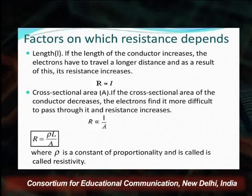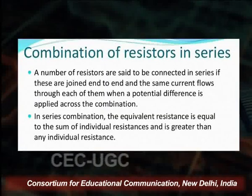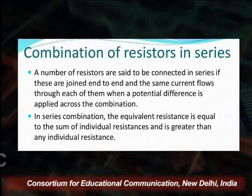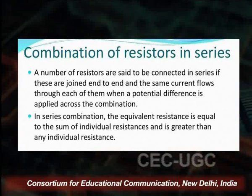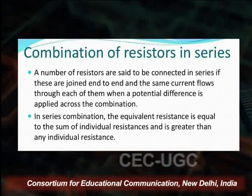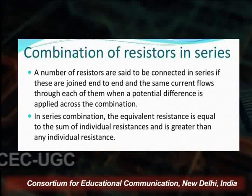Resistance depends upon two factors: first is the length and second is the cross-sectional area. There is a table explaining resistivity with respect to temperature for various materials. Now, regarding the combination of resistors in series: we can get two types of combinations — resistors in series and resistors in parallel. A number of resistors are said to be connected in series if they are joined end to end and the same current flows through each of them when potential difference is applied across the combination.